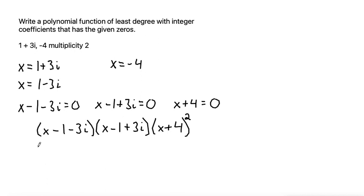When we distribute out the two imaginary factors, we get x times x is x squared. x times negative 1 is negative 1x. x times 3i is plus 3ix. Negative 1 times x is negative 1x. Negative 1 times negative 1 is plus 1. Negative 1 times plus 3i is minus 3i. Negative 3i times x is negative 3ix. Negative 3i times negative 1 is plus 3i. And negative 3i times positive 3i is negative 9i squared. So that's all of our terms for our imaginary factors. And then let's just bring down the x plus 4 squared for now.